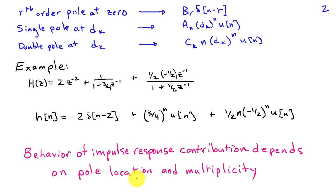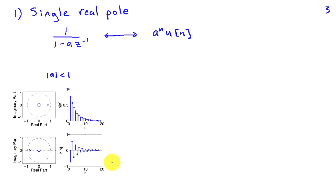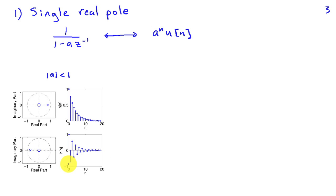Poles at zero are particularly simple — just a single impulse at location r. Poles at other locations in the z-plane produce exponential-type terms with characteristic shapes. For a single real pole, 1 over (1 minus a z^{-1}), the inverse z-transform is a^n u(n). For a pole at about 0.8 on the positive real axis, the impulse response shows a characteristic exponential decay. If the pole is on the negative real axis, we get the same exponential decay but with alternating sign.